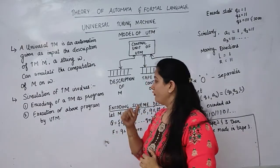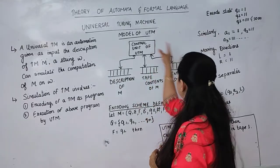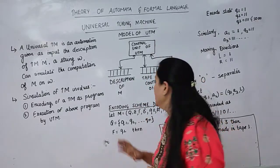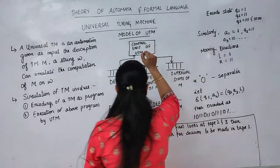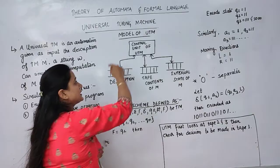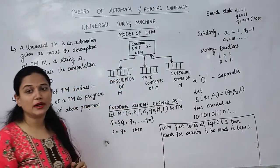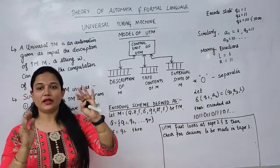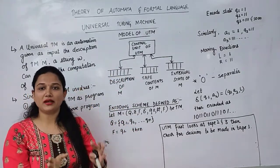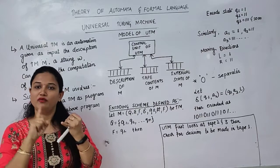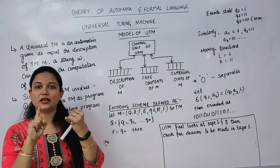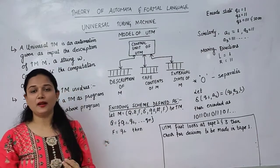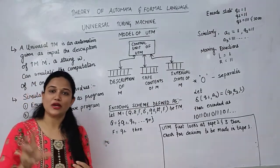Consider this model of universal Turing machine. Within that model, there is a control unit, and that control unit will run whatever input we are giving. The first input is the Turing machine itself and the second input is the string itself.